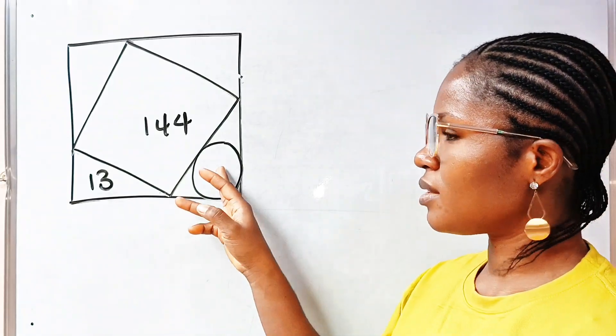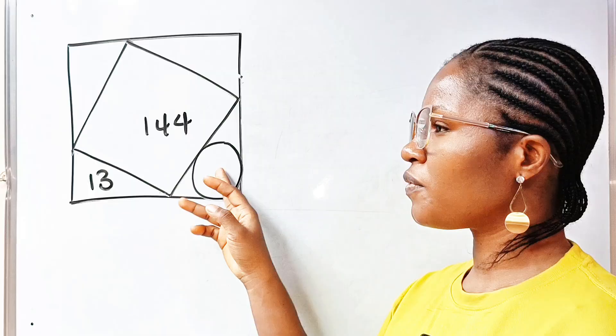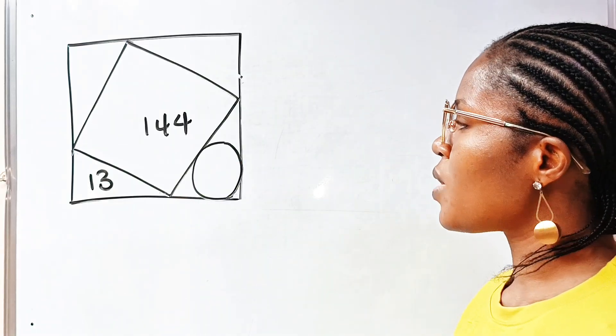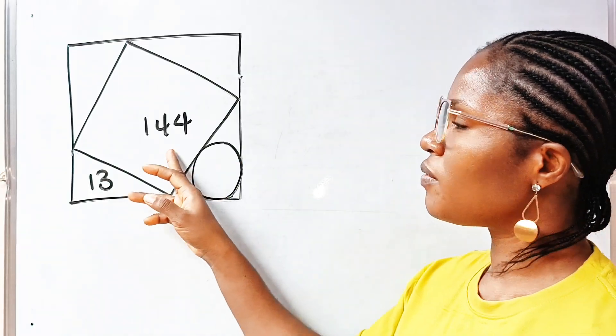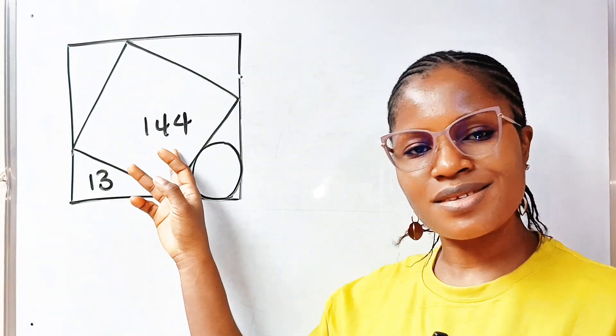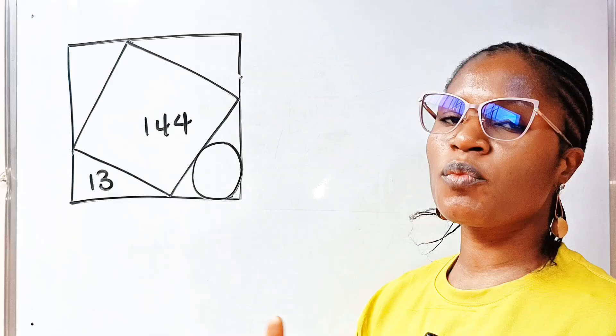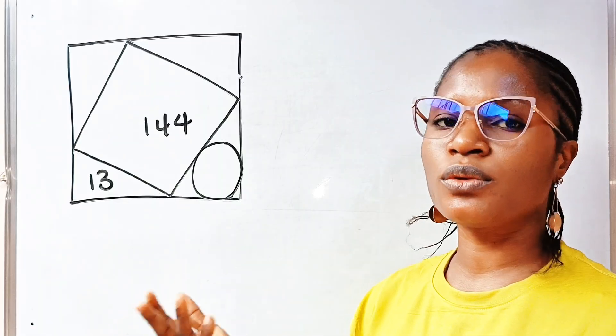Today, we are asked to find the area of this circle. Since we are given the area of this square, let's start with the known. Then, we move over to the unknown.